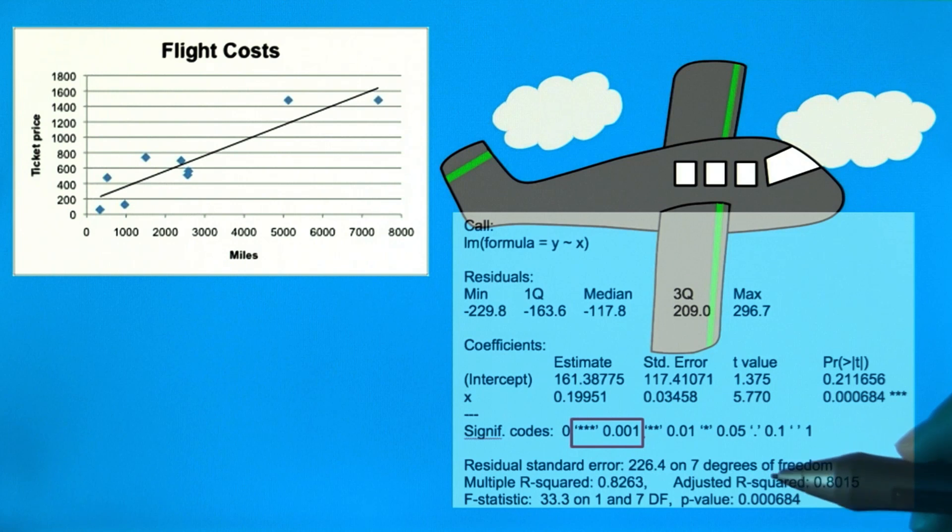Since the slope is significant, we know there's a true relationship between the distance traveled and the cost of the plane ticket.